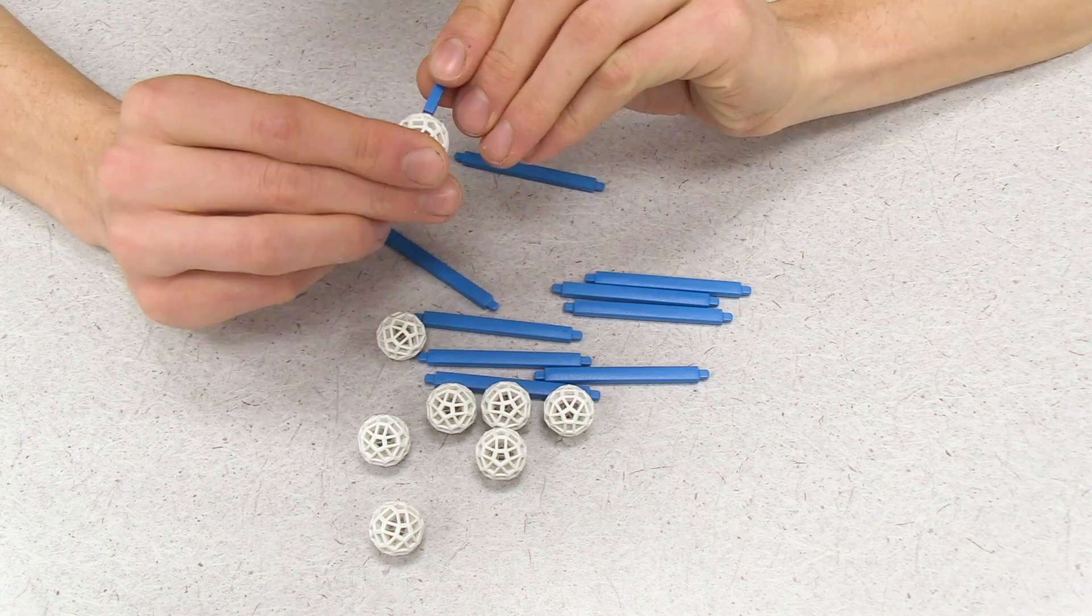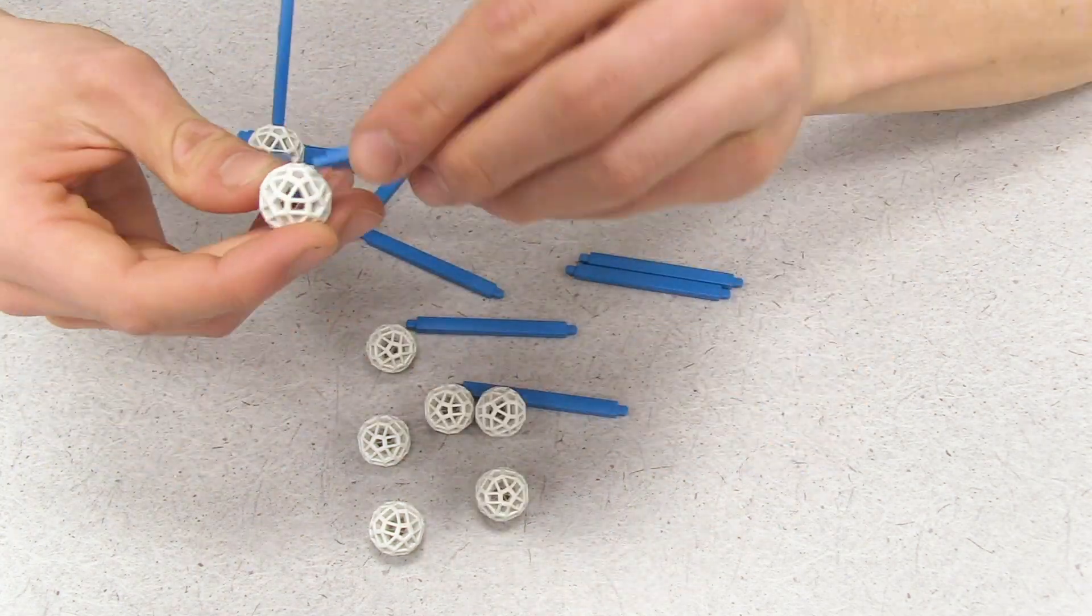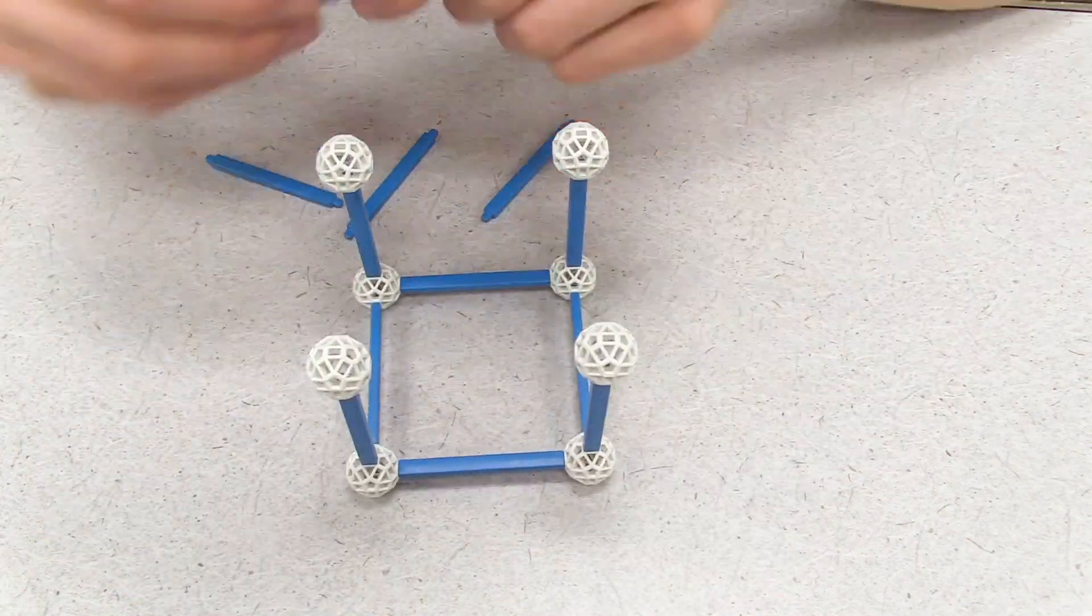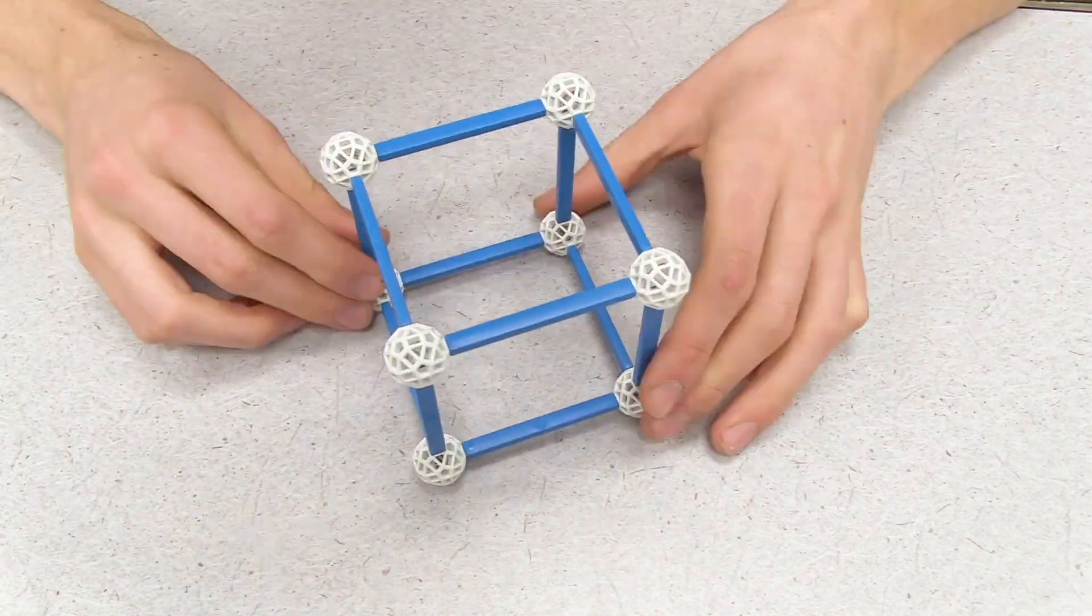So now we're going to construct our Bravais lattices. We'll start with simple cubic. Begin by taking eight balls and connecting them with sticks such that each ball sits at the corner of a cube.